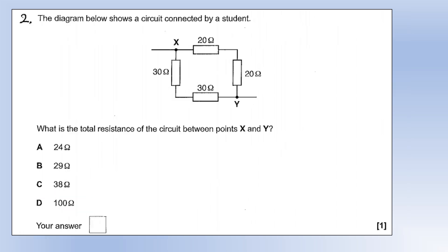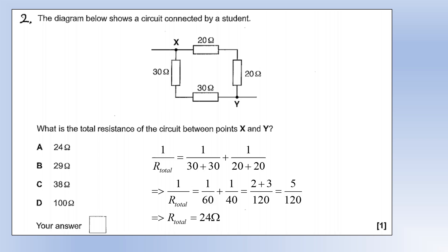Question 2: find the total resistance between points X and Y. The circuit has two parallel loops. Calculate the resistance of each loop separately — one is 30 + 30, the other is 20 + 20 — then use the parallel law to combine them, add them in series, and the result is 24 ohms, which is option A.